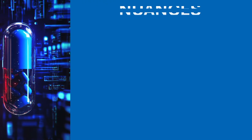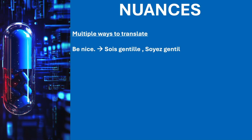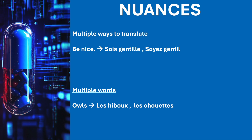Though the BLEU score is a great way to check the quality of translation, it has got some nuances and limitations. For example, if you take an English sentence 'be nice,' it can be translated in two ways in French, which will depend on the gender of the person to whom you are speaking. So it is very useful to have multiple references. Now let us take another example: 'owls are active at night.' The word owl can be translated to 'le hibou' or 'le chouette' in French. So you also need to consider different ways to say the same word while constructing the reference.